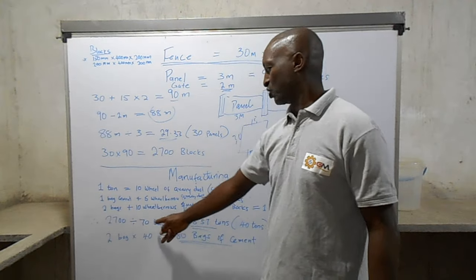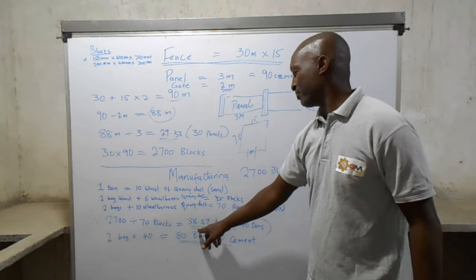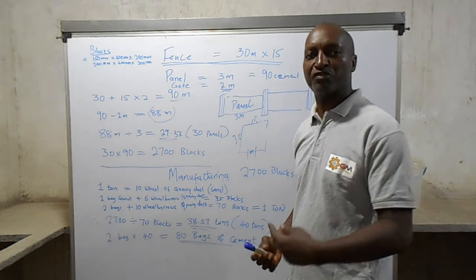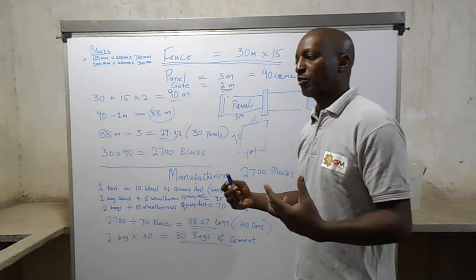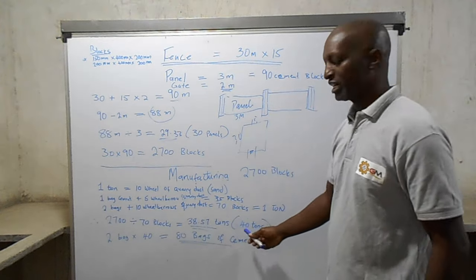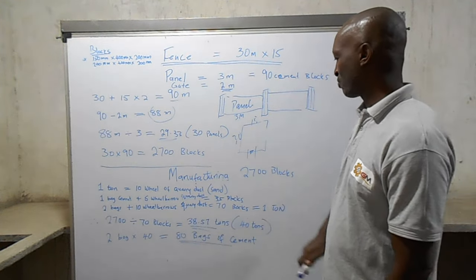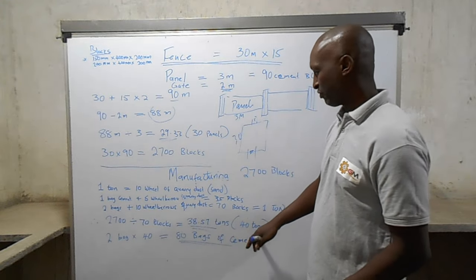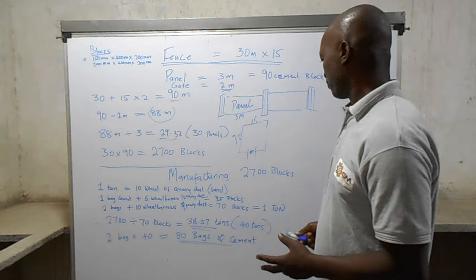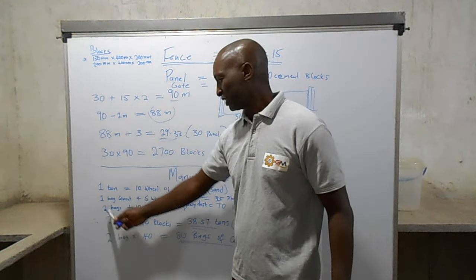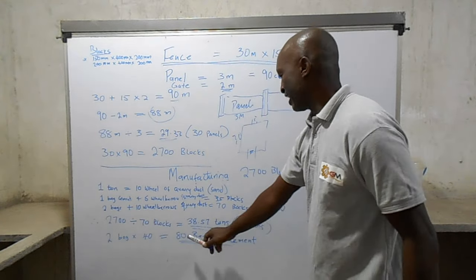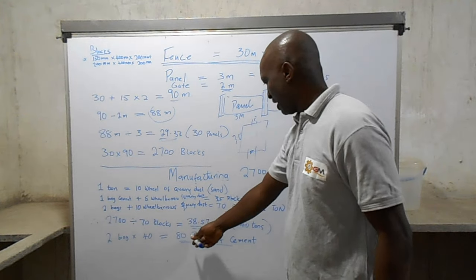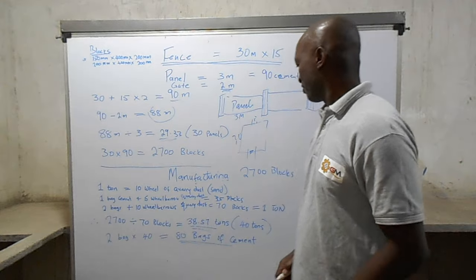We take 2700 divided by 70, which gives us 38.57 tons. Rounding up to the nearest truck load, we need 40 tons of quarry dust to make our 2700 blocks. Since we use two bags of cement per ton, we take 2 times 40, giving us 80 bags of cement. So to build this fence you're going to need 80 bags of cement and 40 tons of quarry dust.